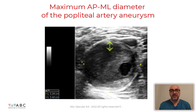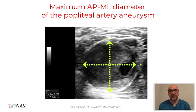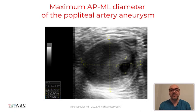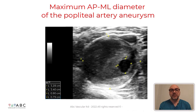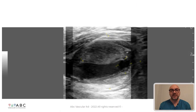By freezing the image we can measure the maximum anteroposterior and medial-lateral diameter of the aneurysm, which are 3.28 cm and 3.4 cm. Moreover, we can also measure the maximum anteroposterior and medial-lateral diameter of the patent residual lumen, which are both less than 1 cm.